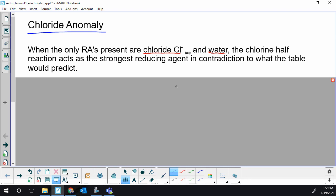So all of these came from reactions of hydrogen and that's where the order came from. There are a few cases where this order doesn't predict reactions with different combinations, and this is one of them. When you have the only reducing agents as chloride and water, the actual reaction that we see experimentally is the chlorine half reaction acting as the strongest reducing agent.